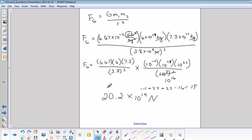So this is not proper scientific notation. 20.2 times 10 to the 19th newtons. So we're going to move this decimal place over and make it 2.0 times 10 to the 20th newtons.